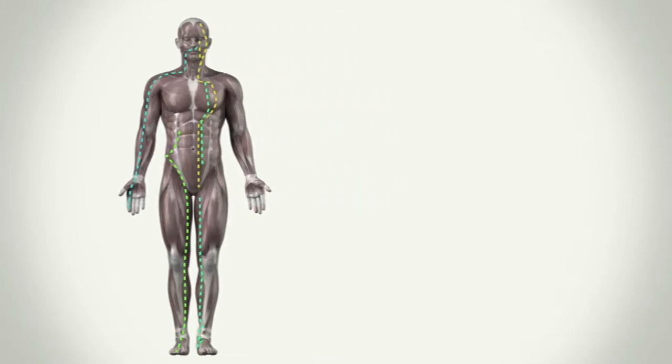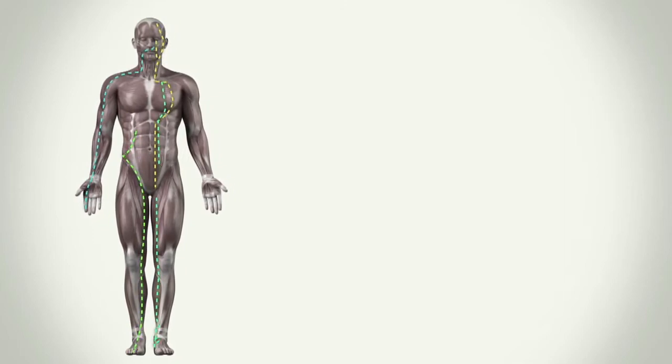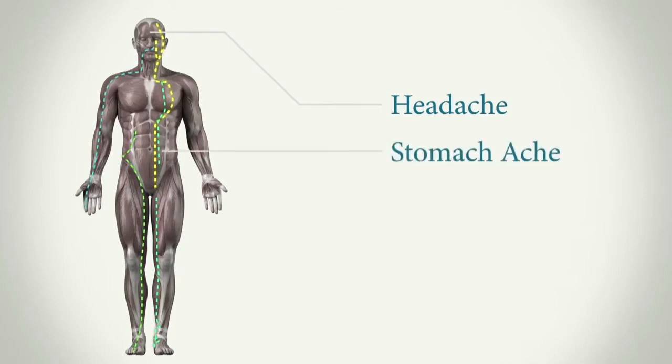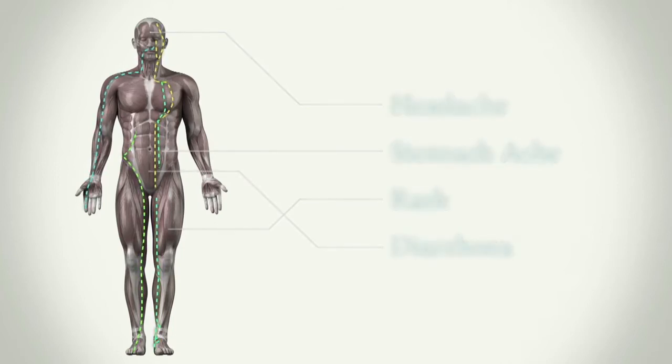For example, a person whose allergy causes a blockage in the liver meridian gets a headache, or the stomach meridian gets a stomach ache, or in the kidney meridian gets a rash, and in the large intestine meridian gets diarrhoea. The person whose allergy causes blockages in many meridians at once gets severe fatigue.